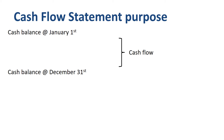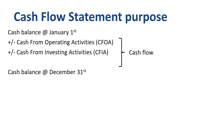Cash flow consists of three categories: cash from operating activities — basically the incoming cash from customers minus outgoing payments to employees, suppliers, and governments; cash from investing activities, mostly outflows due to capital expenditures and acquisitions; and cash from financing activities, cash inflows or outflows due to changes in borrowings and issuing equity.